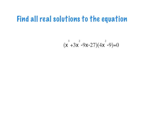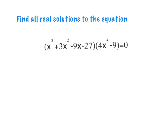Find all real solutions to this equation. This one looks a little different — it's a special type of factoring we've previously talked about. There are four terms here, and it's not a quadratic — my highest exponent is cubed. So I cannot use the quadratic formula or completing the square. What I can do with four terms is factor by grouping.